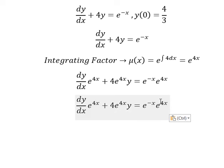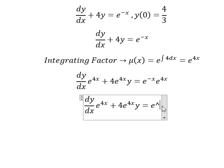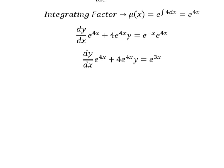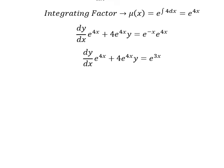So negative x plus 4x in the power, we can simplify and we have 3x. Next we need to integrate both sides.